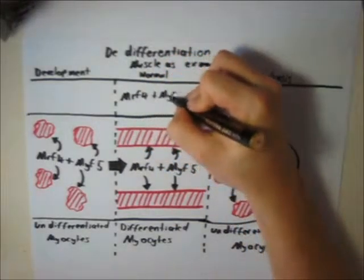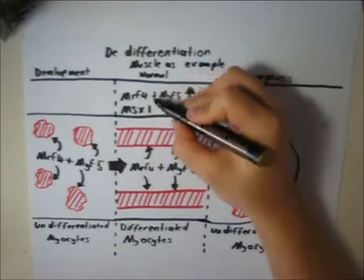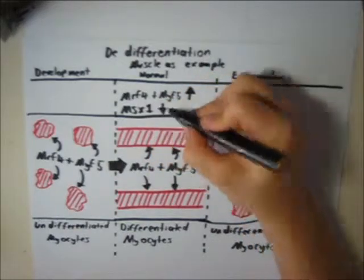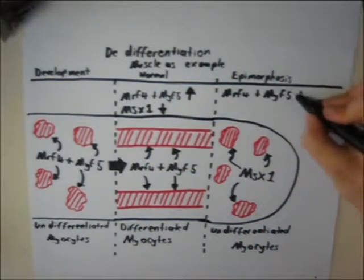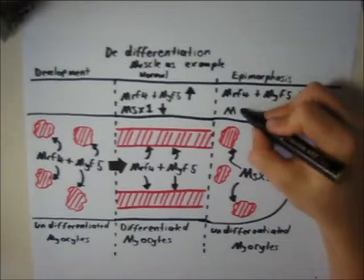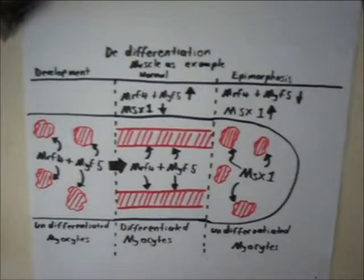and also a downregulation of MRF4 and MYF5 genes, which are characteristic of differentiated tissue.